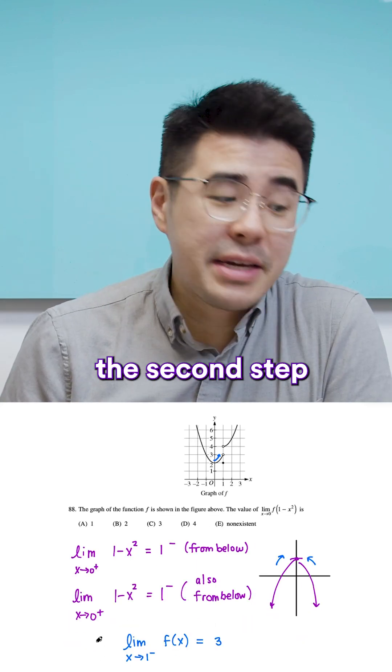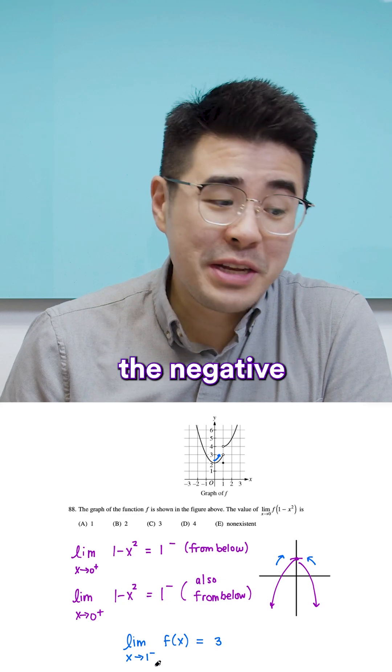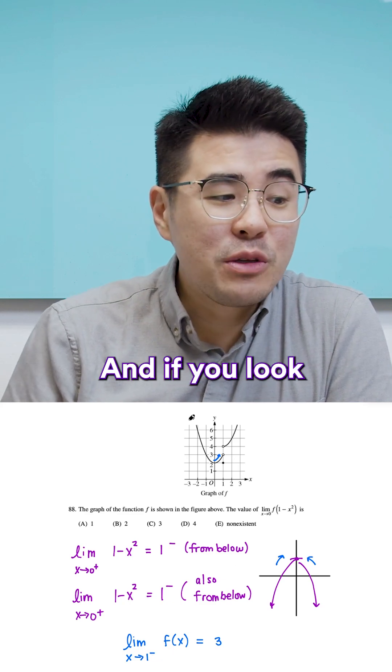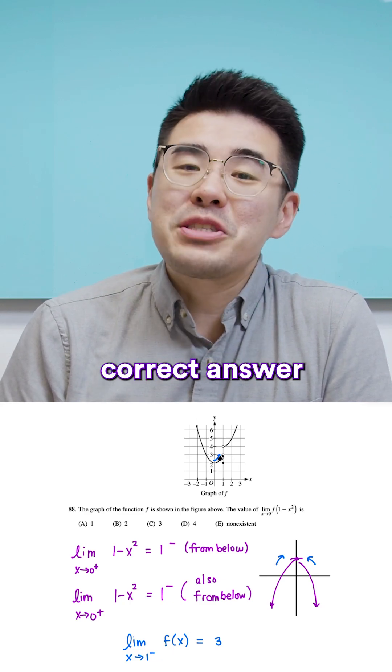So then the proper way to do the second step is to evaluate the limit as x approaches 1 from the negative side of f of x. And if you look at the graph, that's going to approach 3. So the correct answer is C.